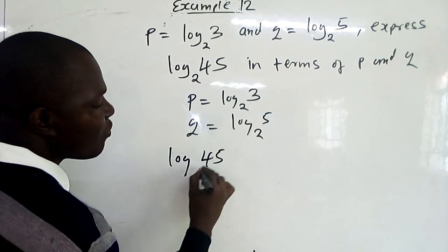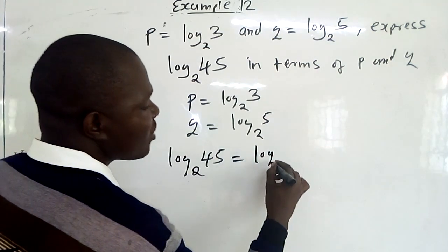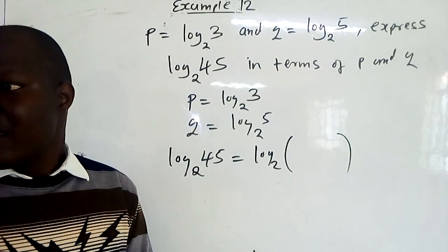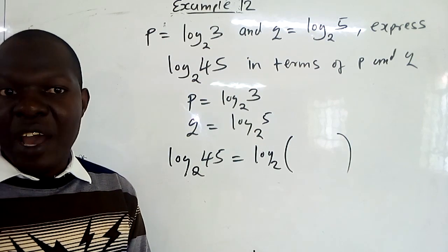We now want to look for log 45 to base 2. Factorize 45 in terms of 3 and 5. 45 is the same as 9 times 5.